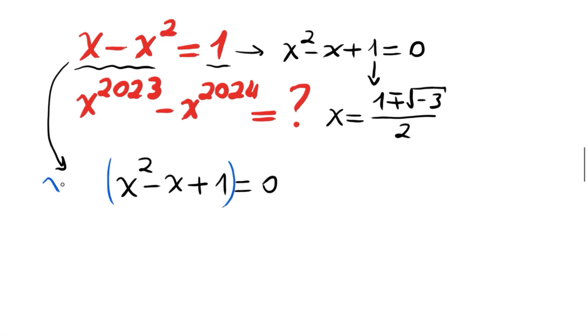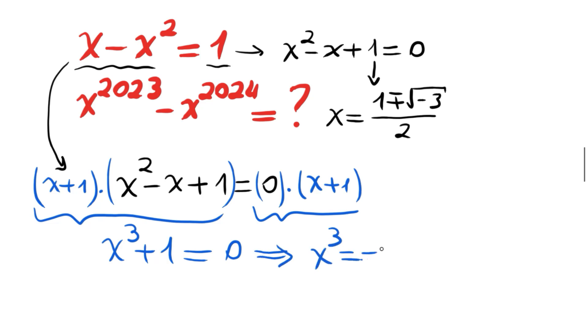x plus 1. Here and here we will get x cubed plus 1, and the right hand side we will get 0. So from this we can say x cubed can be equal to